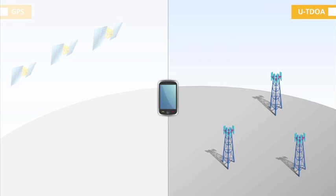With UTDOA, sensitive receivers within the cell towers pick up the signal from a mobile phone. The difference in time the signal reaches multiple towers is used to calculate the phone's location.